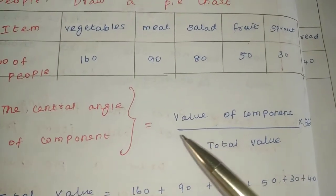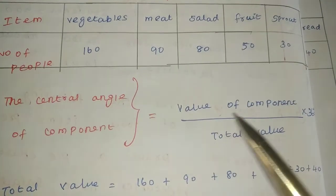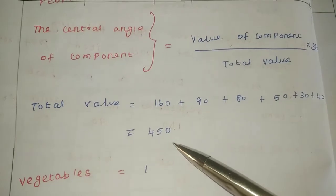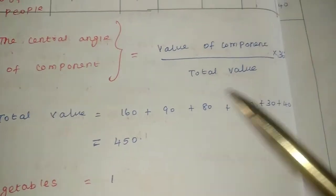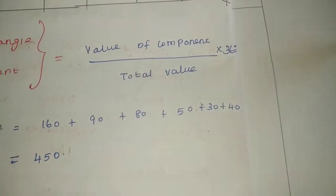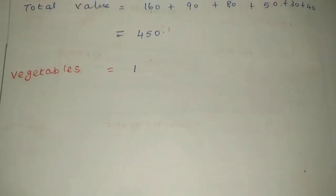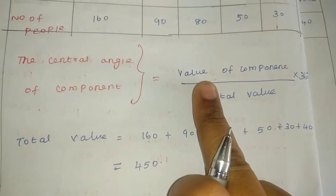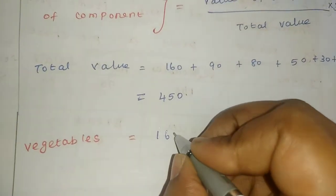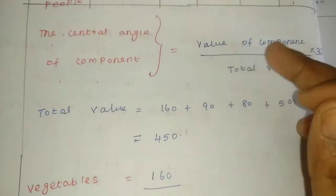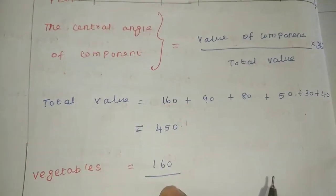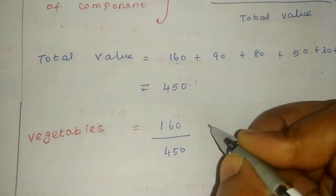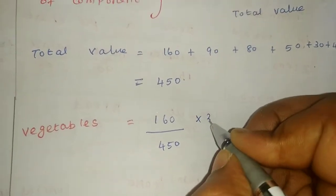The total is 450. For Vegetable, the value of the component is 160. So the formula is: 160 divided by the total value 450, multiplied by 360.